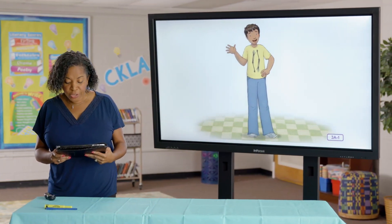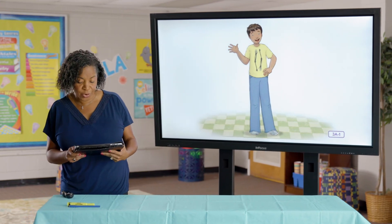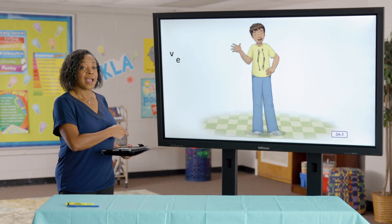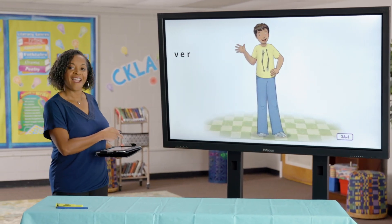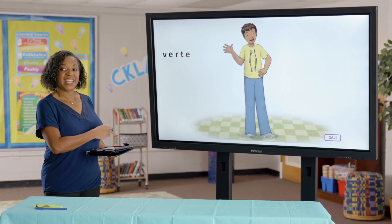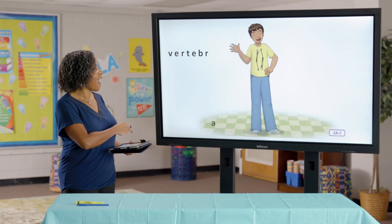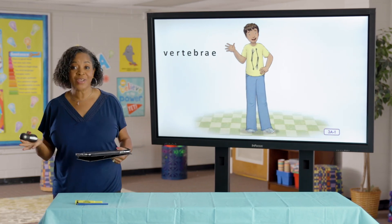Hello again. Before we begin, I want to know who is able to correctly spell the big V word that we talked about last time we met. Who would like to try and spell vertebrae? Get the letters of the word vertebrae in your head. Spell it out loud, or you can write it down. Let's check to see if you are correct. The letters are: V-E-R-T-E-B-R-A-E. Vertebrae. I hope a lot of my friends out there got that correct.